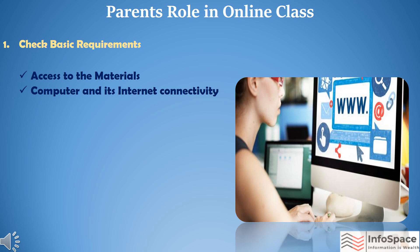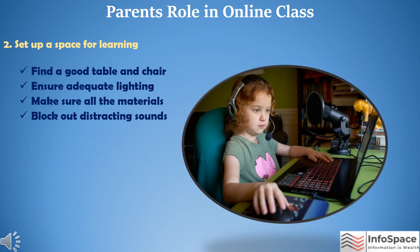Number two is setting up a space for learning. Find a good table and chair — children should be comfortable, but not too comfortable, because they tend to lose focus or fall asleep. Ensure adequate lighting; a study area should not be dark or too bright, as dark rooms put a strain on their eyes. Make sure all the materials your child needs are nearby, and block out distracting sounds by turning down the volume from surrounding devices.